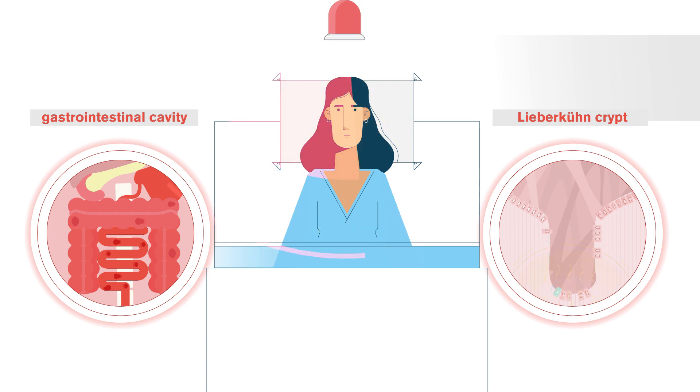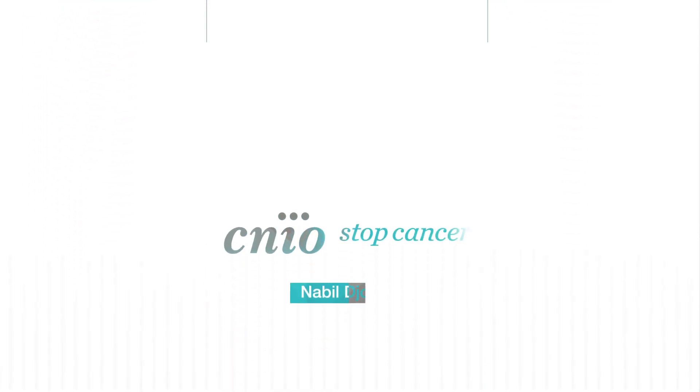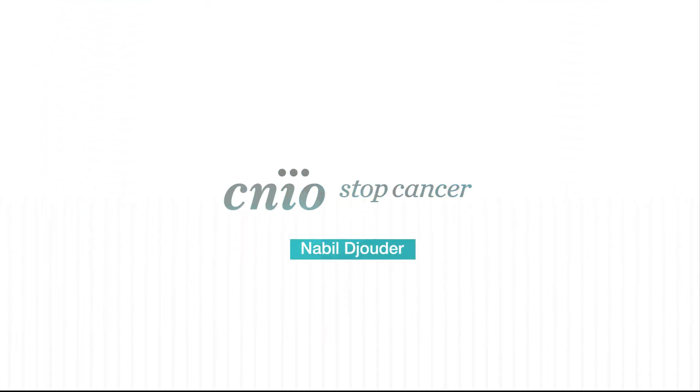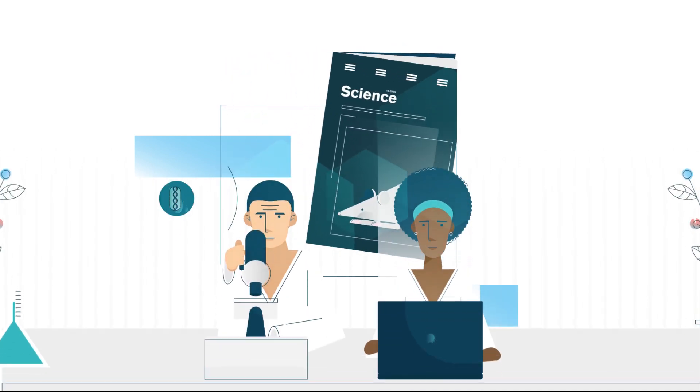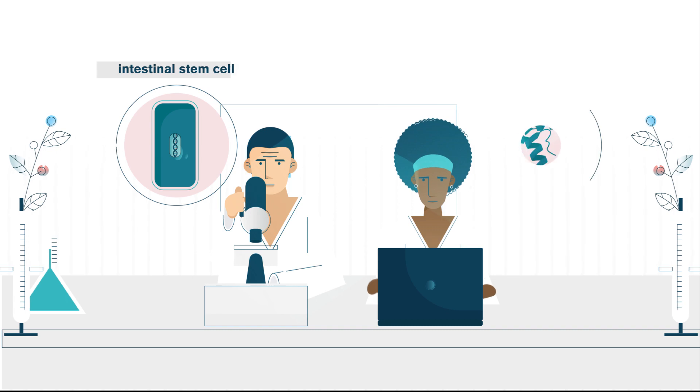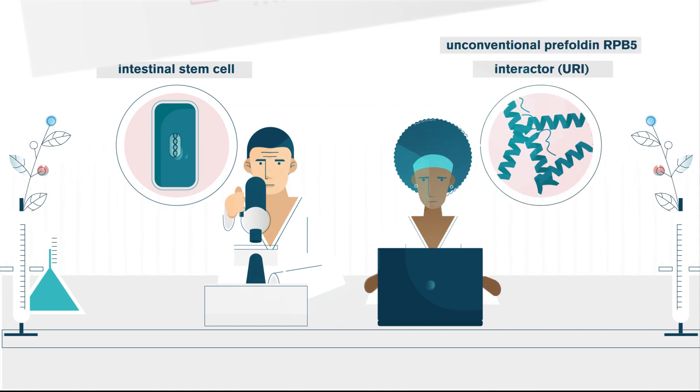In some cases, the intestine is not able to recover after the damage, leading the patients to death. Now, a team of researchers led by Nabil Duda at the Spanish National Cancer Research Centre has published in the journal Science that some intestinal cells have a protein that protects them against radiation: URI.